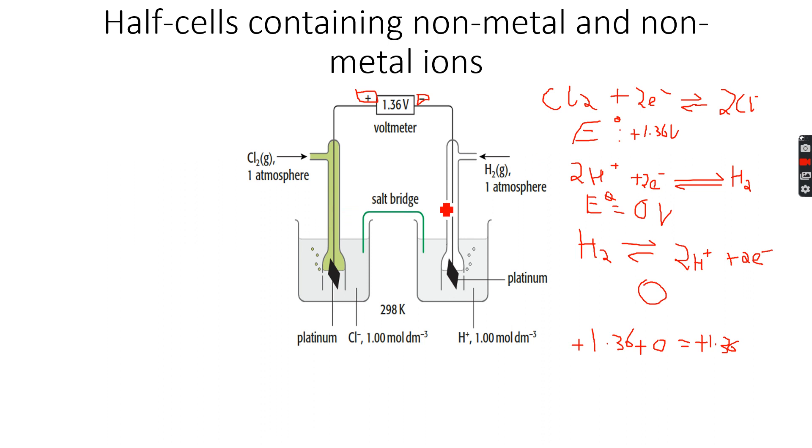So hydrogen is more likely to give up electrons. Compared to chloride ions, hydrogen is more likely to give up electrons. And since hydrogen is more likely to give up electrons, this will become the negative electrode and this will remain the positive electrode. And the direction of electron flow is from negative to positive, so the electrons are flowing this side towards the left. Now let's move forward.